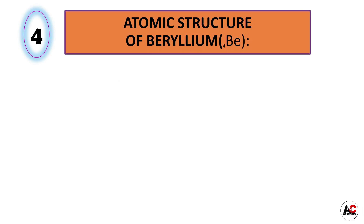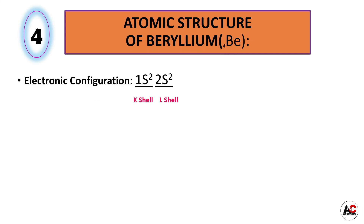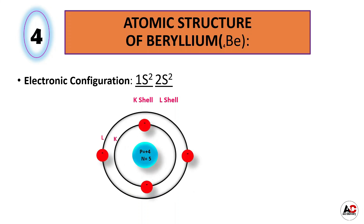Now beryllium. Atomic structure of beryllium. The atomic number of beryllium is 4, meaning it has 4 electrons. So the electronic configuration of beryllium will be 1s2, 2s2. With the help of this electronic configuration we will draw the structure of beryllium. It has 4 protons and 5 neutrons inside the nucleus and 4 electrons around the nucleus: 2 are in the K shell and 2 are in the L shell.